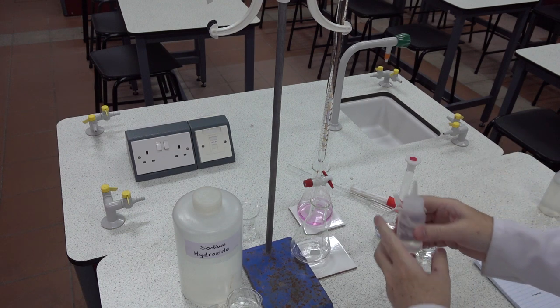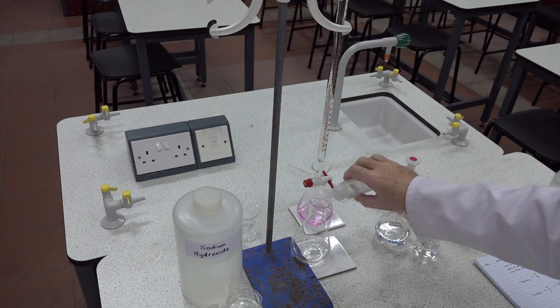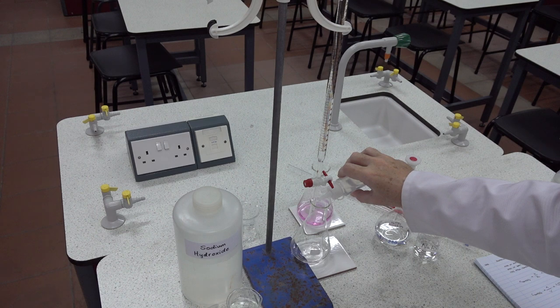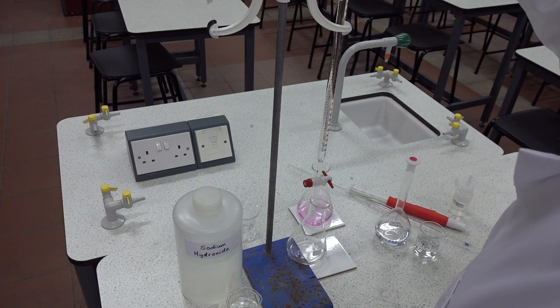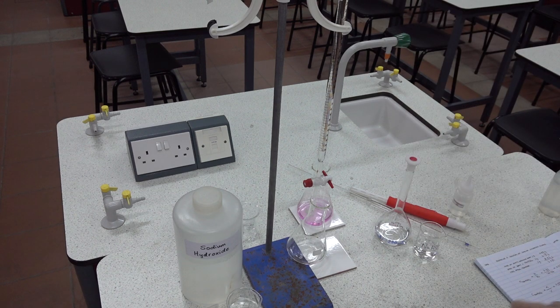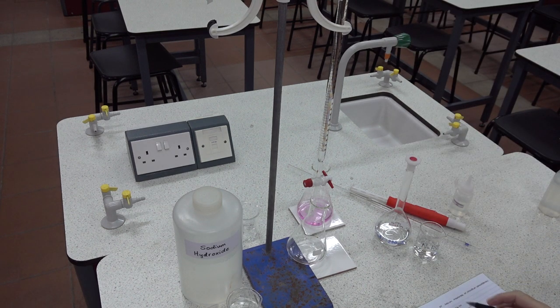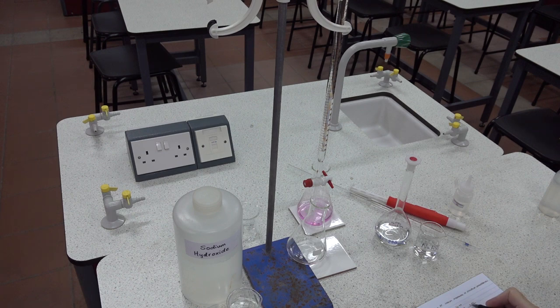We'll be using phenolphthalein indicator - we add two to three drops and we're now ready to go. Take an initial burette reading. This one is set up so that's 0.0 and we write that down in our lab book.